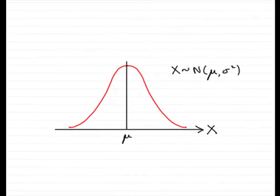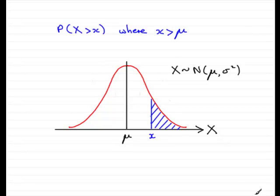Hi, welcome to this tutorial on the normal distribution. In this particular tutorial, what I'm going to be showing you is how to work out the probability of being more than an observed value x, when that observed value is greater than the mean mu. In order to do this, it's best if we run through an example.